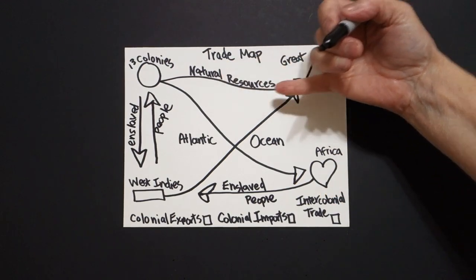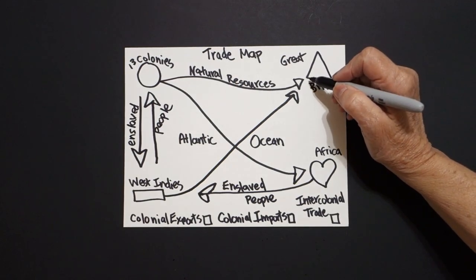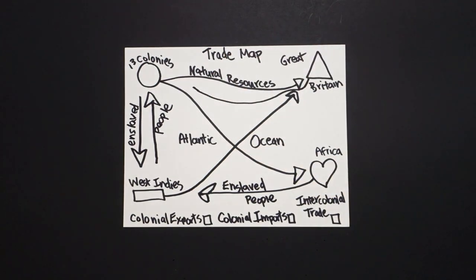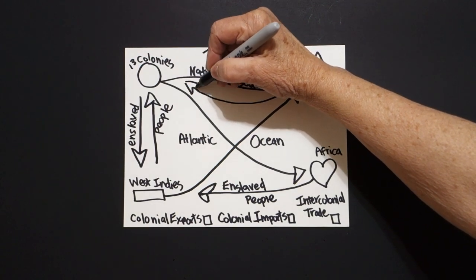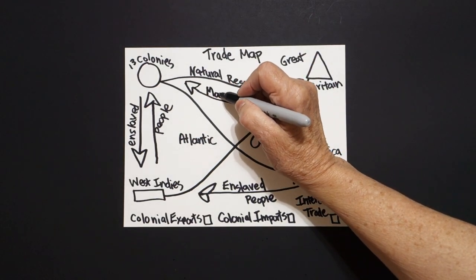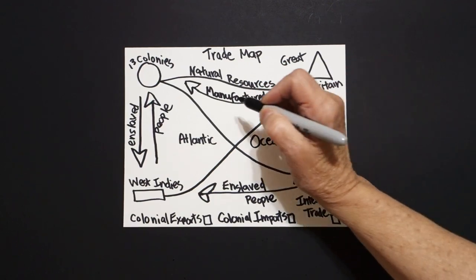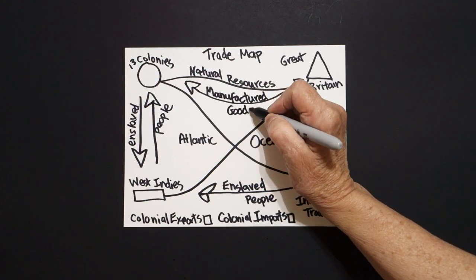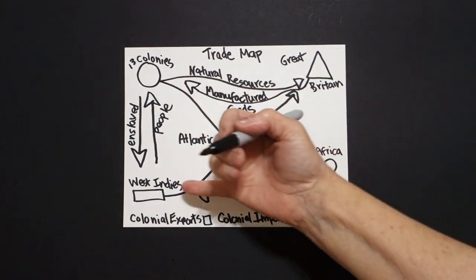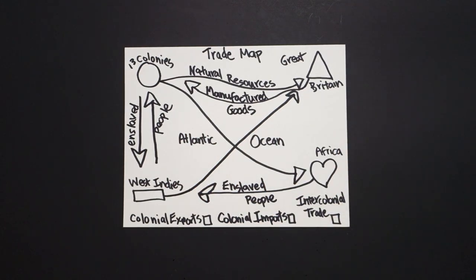The natural resources basically came from the 13 colonies. What did we get from Britain? From Britain, you're going to draw a curved line up towards the 13 colonies, and they imported to the colonies manufactured goods. This is what's setting up the American Revolution — manufactured goods. So you can see how they were all dependent on each other's trade in order to get the things that they wanted.